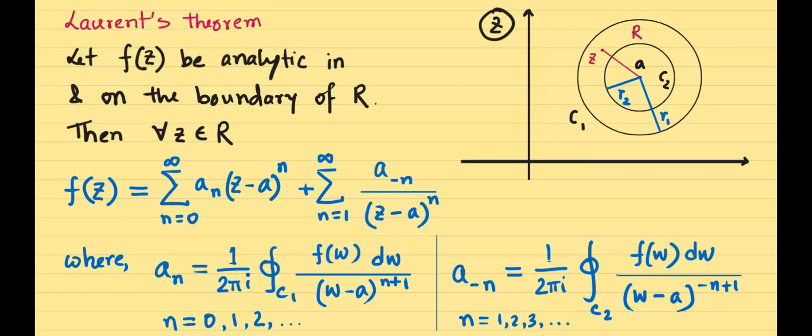So there is a function f which is defined at least in the region R, and R is an annular region, that means it's a ring-like region which is confined by two circles, c1 and c2. c1 has a radius r1, which is the bigger radius, and c2 has a radius r2, which is a smaller radius. These two circles are concentric, that means they have a common center, which is called a. The function f is analytic inside the region R and on its boundary as well.